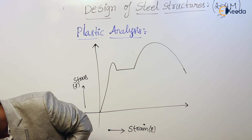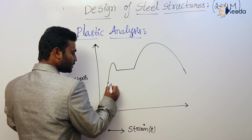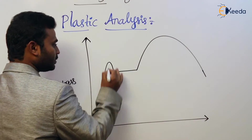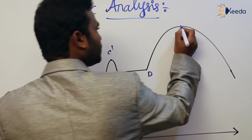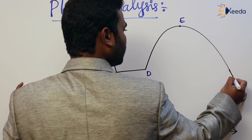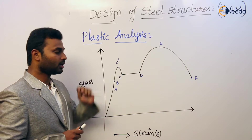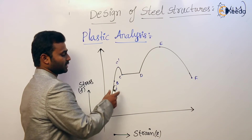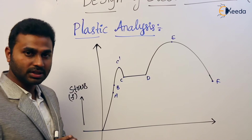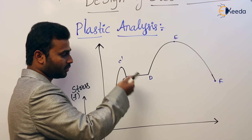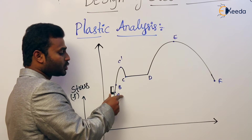If we mark the important points on this graph: point A, point B, C-dash, C, D, E, and F. Most of you have discussed these in strength of materials, but I will repeat again. Point A is the proportional point, and point B is the elastic point.